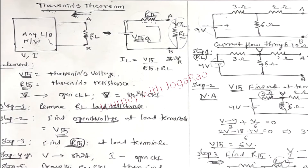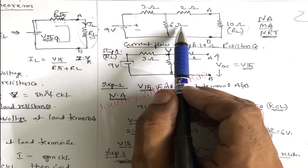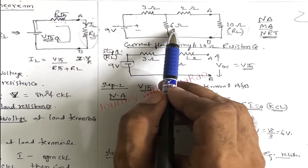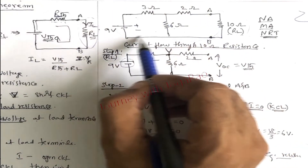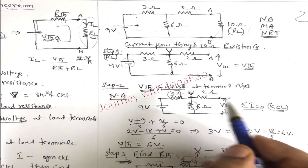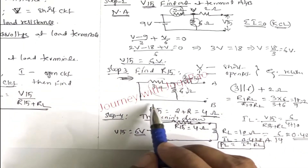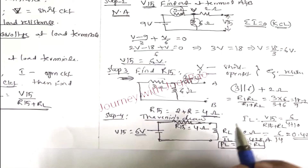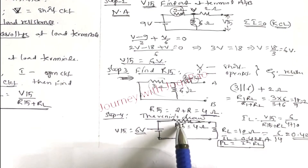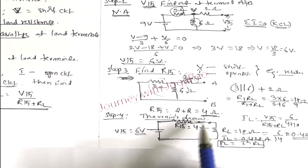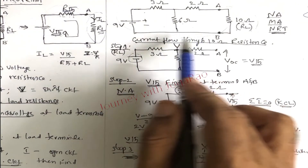Here is an example problem. The circuit has a standard voltage source with a single resistance and load resistance. Given values: 2Ω, 6Ω, 2Ω, 9V source, and load resistance. Using Thevenin's theorem, we find V_Thevenin = 6V and R_Thevenin = 4Ω. The Thevenin equivalent circuit is matched with V_Thevenin and R_Thevenin.